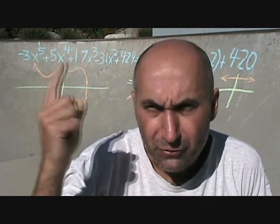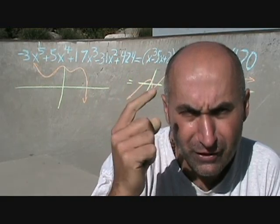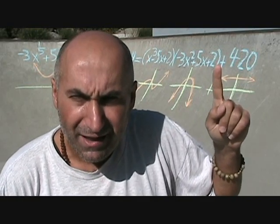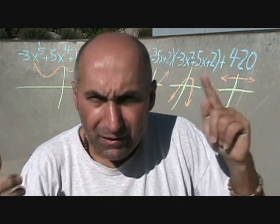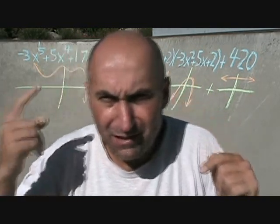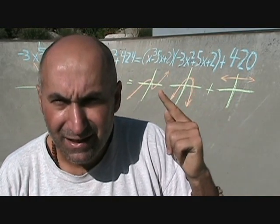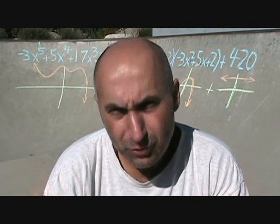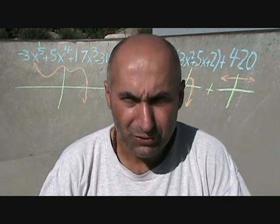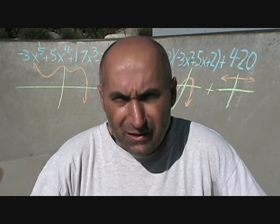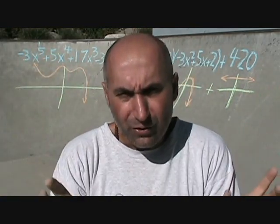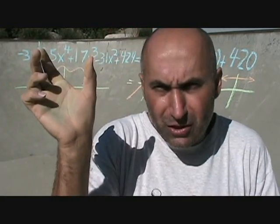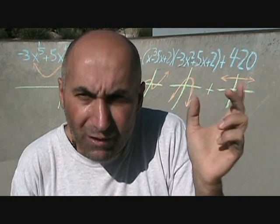What we did in the long division was take the original function and divide the negative 3x² expression into it to see what would happen — this function times what equals this? This function times the quotient plus 420 equals the original function. With polynomials and functions in general, we're learning different techniques to break things down, look at their core elements, combine functions, and see what happens.